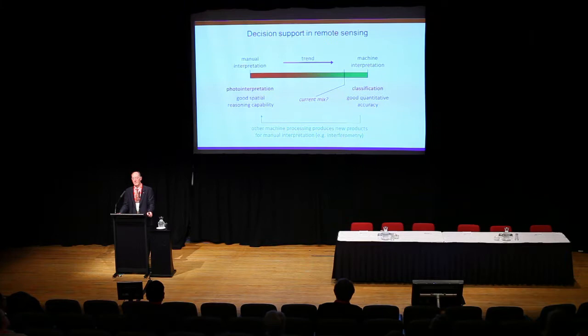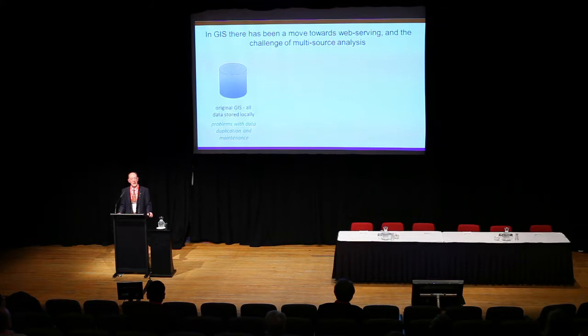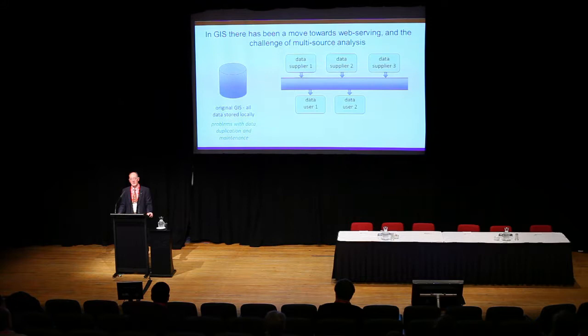Why decision support? Because they're supporting somebody who has a responsibility to make a decision about some particular spot on the Earth's surface. Now, in the early days of Geographic Information Systems, almost every agency was buying the same set of data to set up a GIS for the same region. But in the mid-1990s we got the idea that it would be far better to have a GIS that was web-served or web-based, so that data users didn't need to hold their own data sources but could purchase them as and when required from data suppliers.